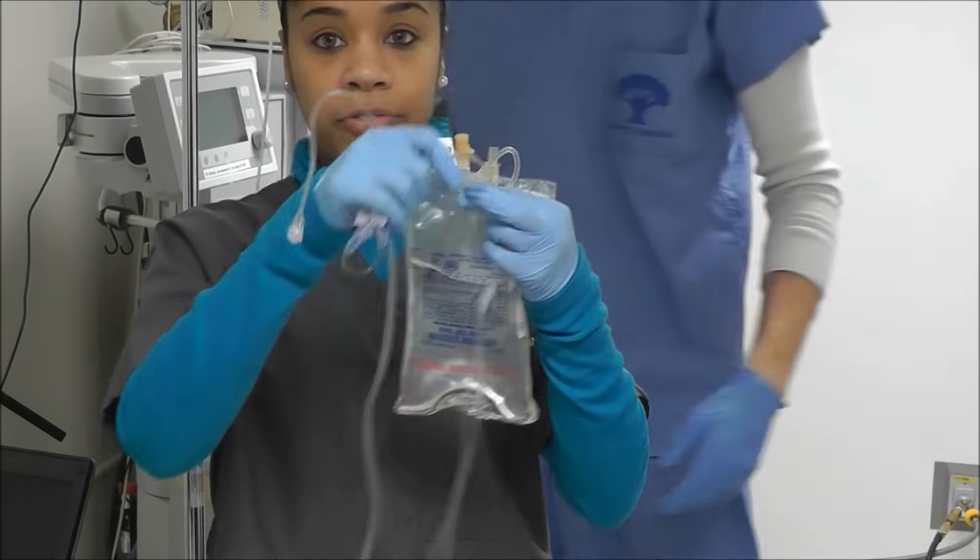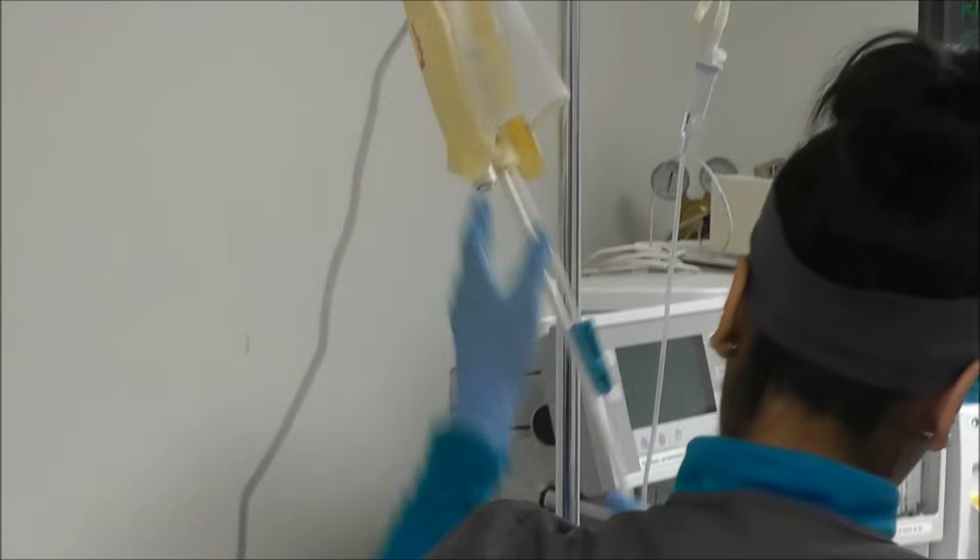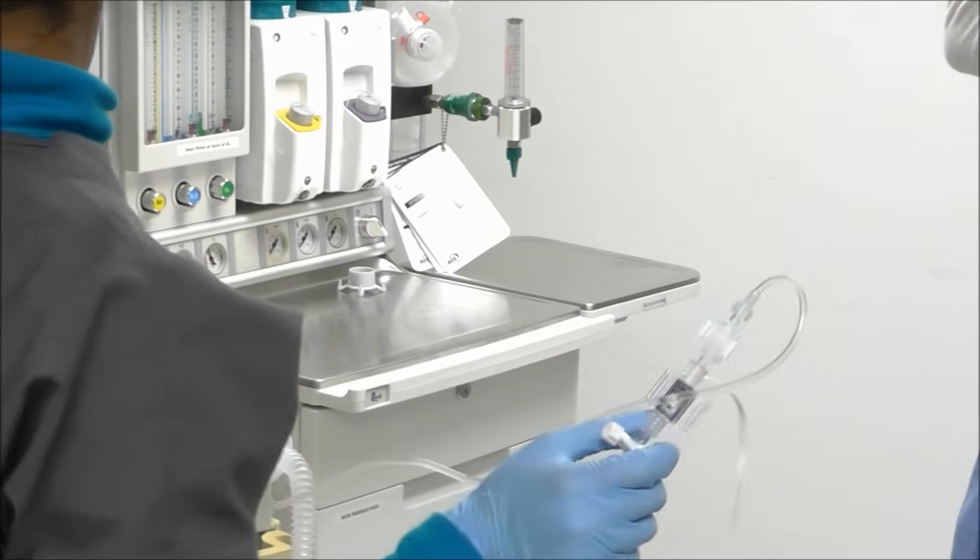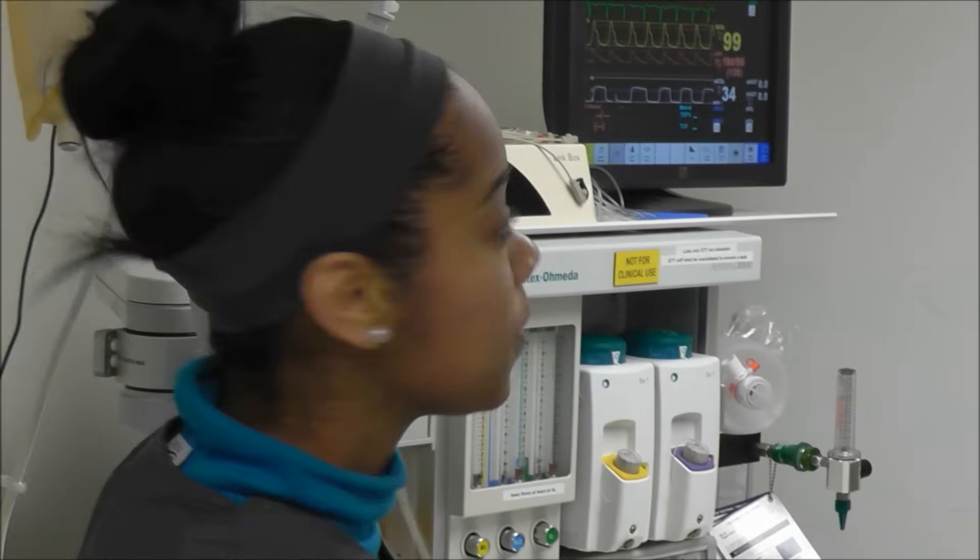First thing you want to make sure you do is flush your tubing. You want to make sure that all your stop cocks are turned on in the right spots and that your roller clamp is open.